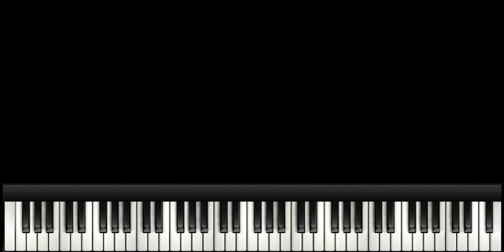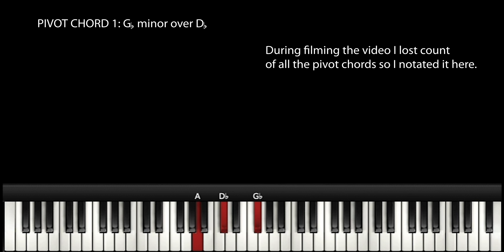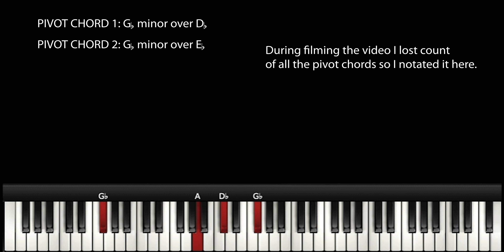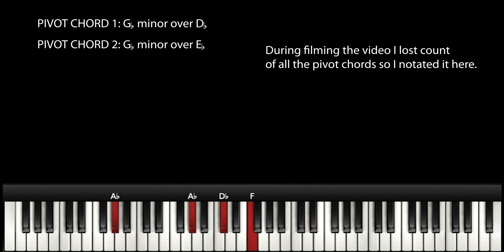Our first pivot chord is this F-sharp, G-flat minor. The second pivot chord would be the G-flat minor over the E-flat. You can play that several ways, or back here, and then we can do this here with the tension.